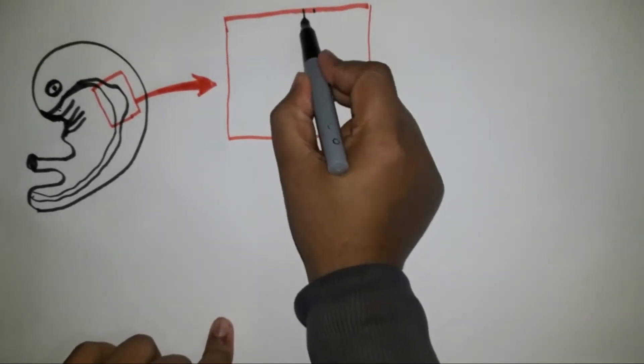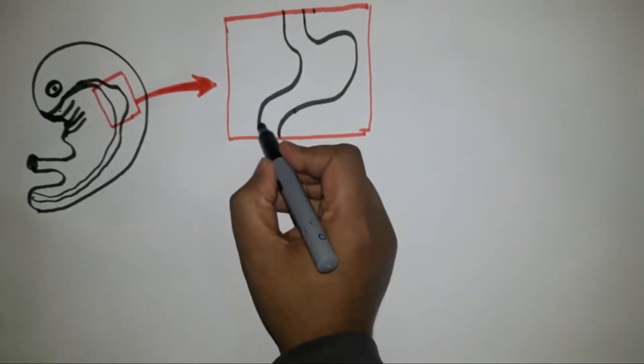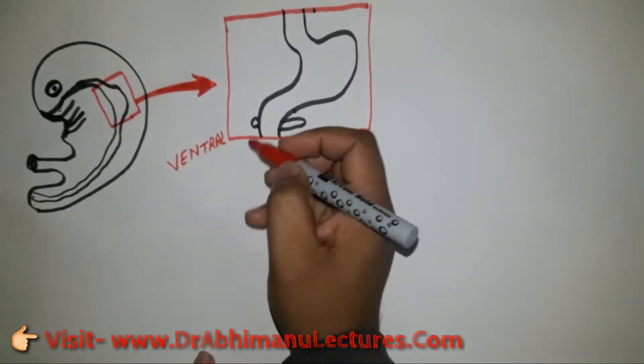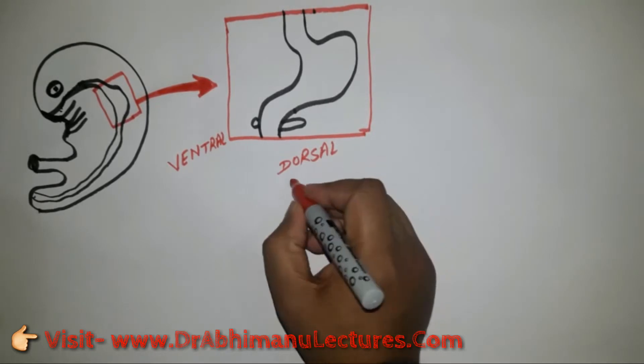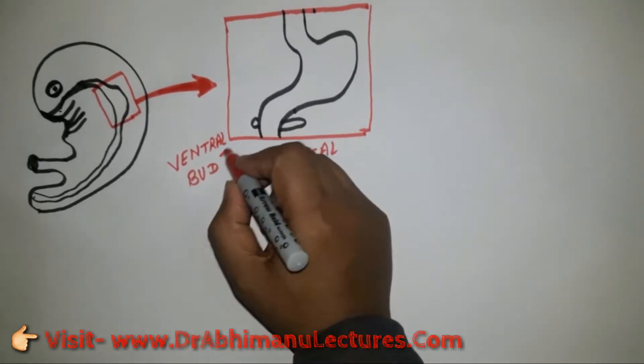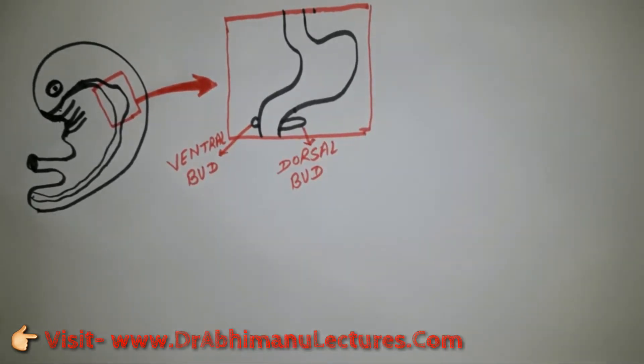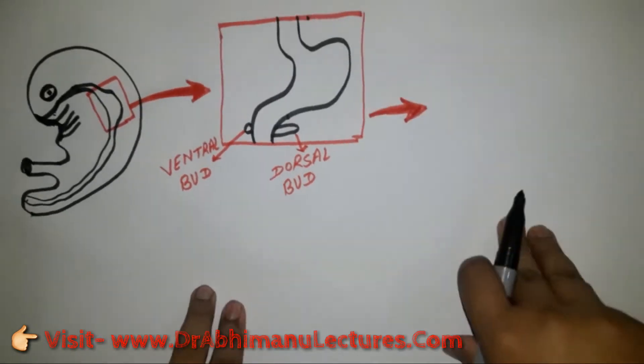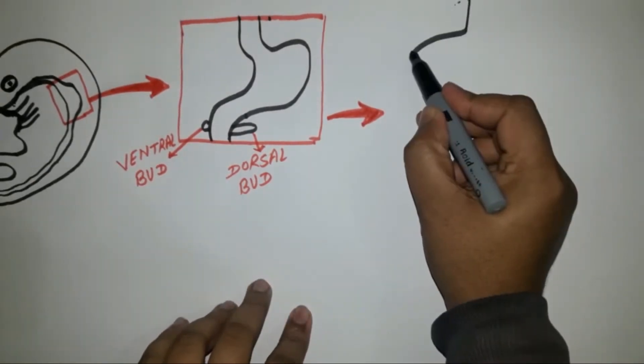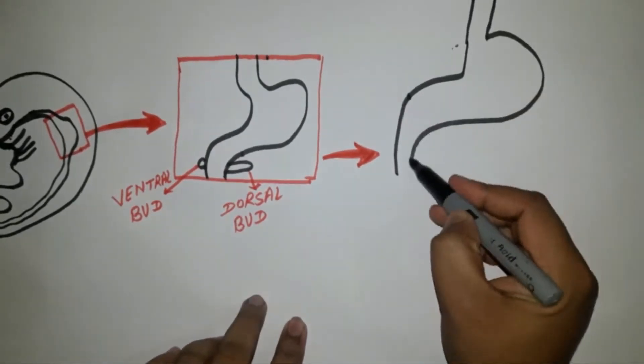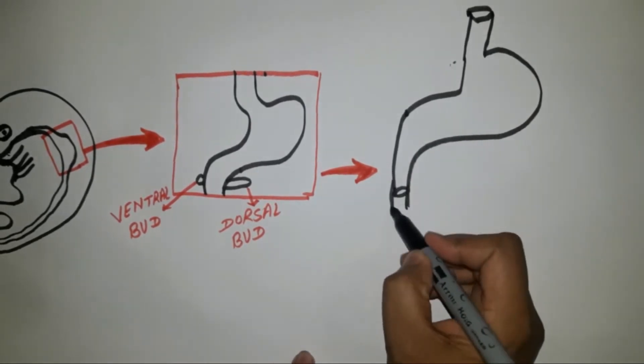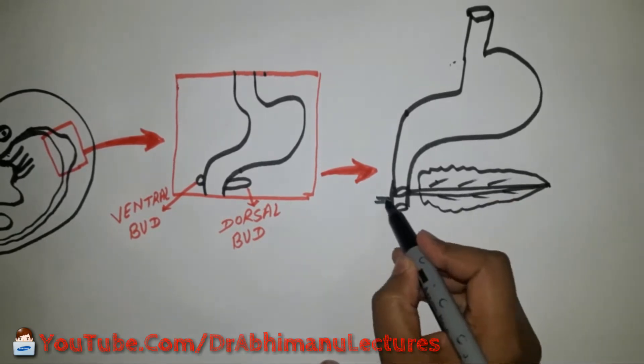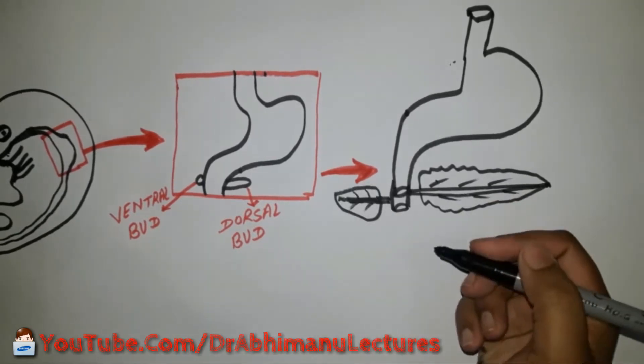Ventral and dorsal pancreatic bud found in C-shaped duodenum. Ventral bud arises from ventral wall of foregut and dorsal bud arises from dorsal wall of foregut.